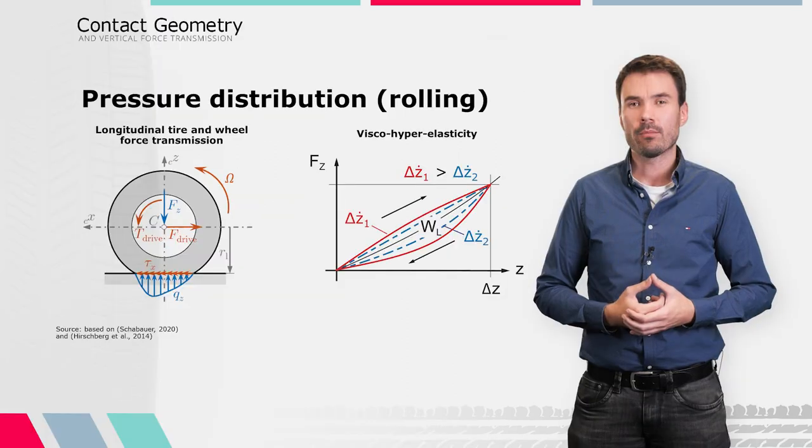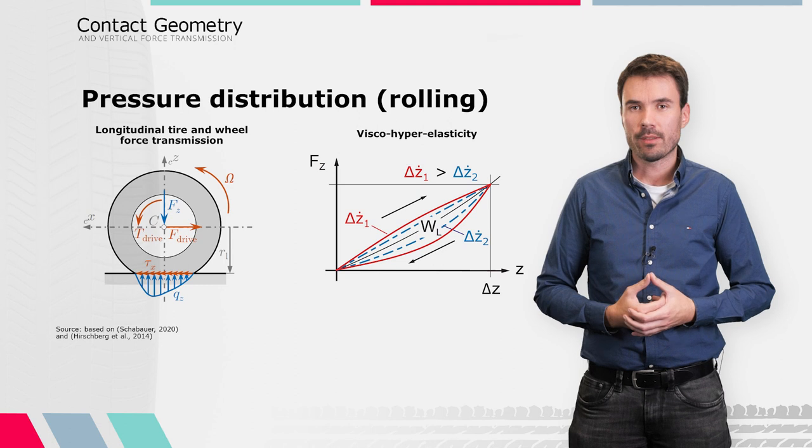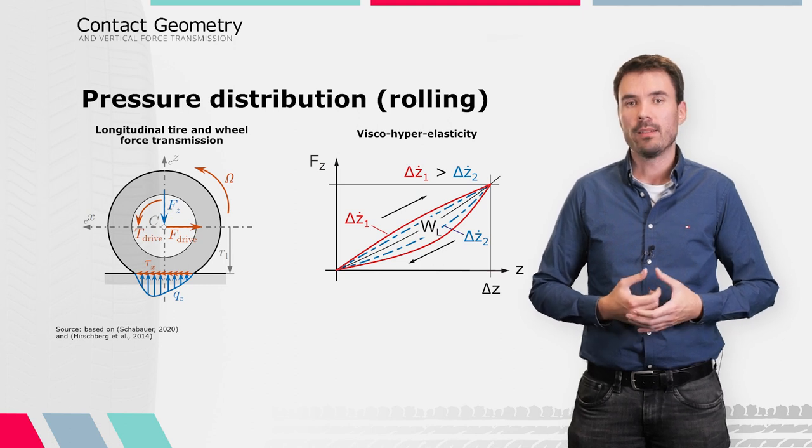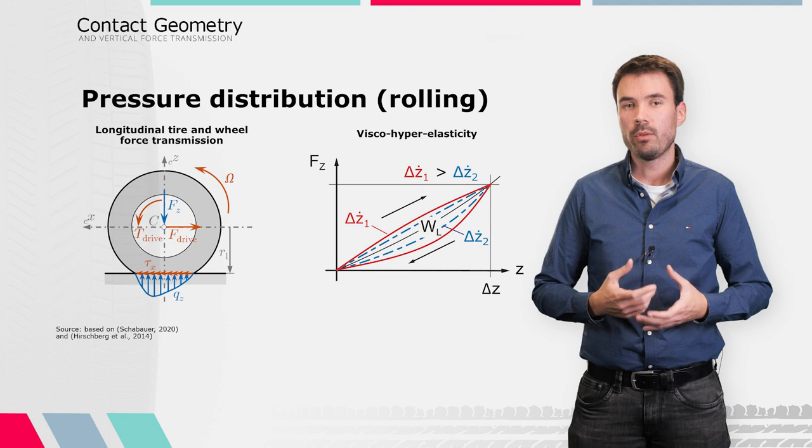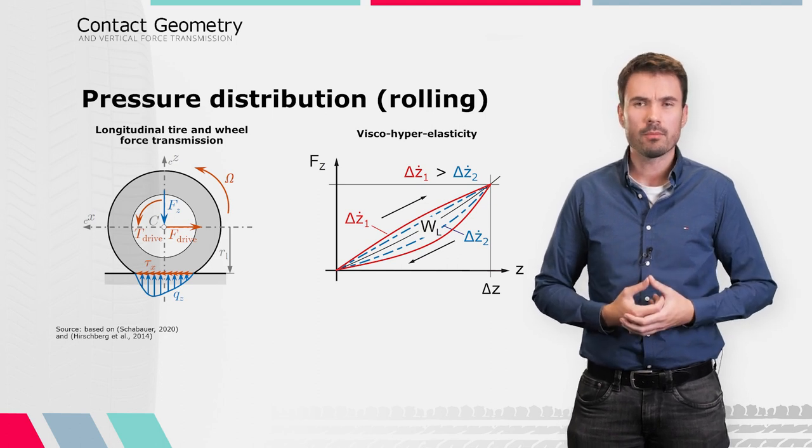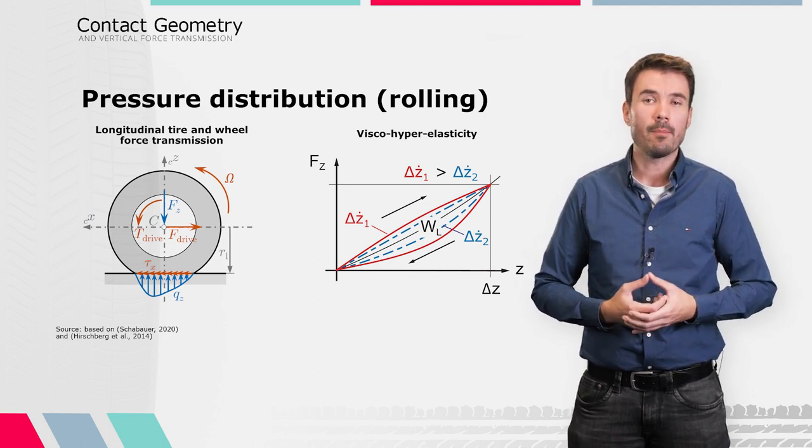However, rubber as an elastomer is a viscoelastic material. This means that when deforming the tire structure, not only pure elastic effects but also viscous dissipation or damping effects occur.